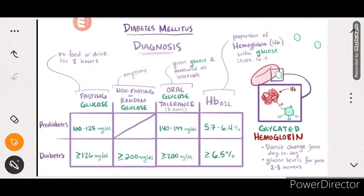In summary: for pre-diabetic patients, fasting glucose is 100-125 mg/dL; OGTT is 140-199 mg/dL; and HbA1c is 5.7 to 6.4%. For diabetic patients, fasting glucose is more than 126 mg/dL; random glucose is more than 200 mg/dL; OGTT is more than 200 mg/dL; and HbA1c is more than 6.5%, which indicates a diabetic patient.